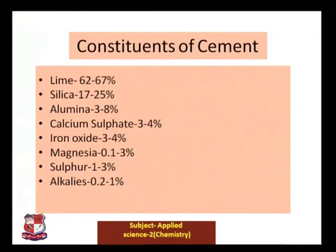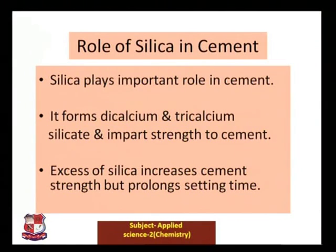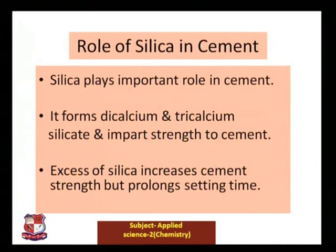Each constituent plays a chief role in different properties of cement. Silica forms dicalcium and tricalcium silicates, which impart special strength to the cement. An excess of silica increases the cement strength but prolongs the setting time — meaning if you add excess silica, strength increases but setting time also increases.